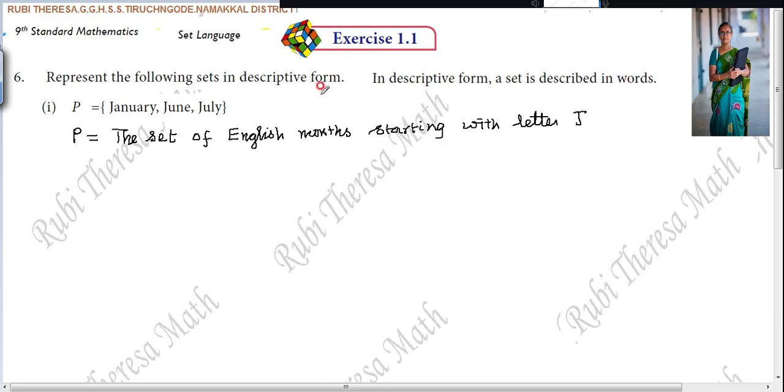Described in words. Shall we go to the next subdivision? Second one. Q equals 7, 11, 13, 17, 19, 23, 29. First, you should identify the number. What type of number is it? They have given in roster form. You have to write it in descriptive form. What type of number is it? What are the prime numbers?